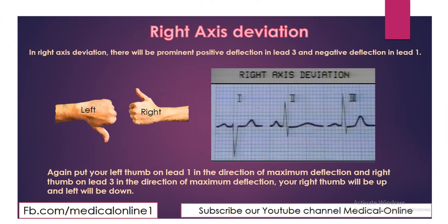In Right Axis Deviation, there is a prominent positive deflection in Lead 3 and a negative deflection in Lead 1. We put our left thumb on Lead 1 and right thumb on Lead 3 in the direction of prominent deflection. In this case, our right thumb is up and left thumb is down, indicating Right Axis Deviation.